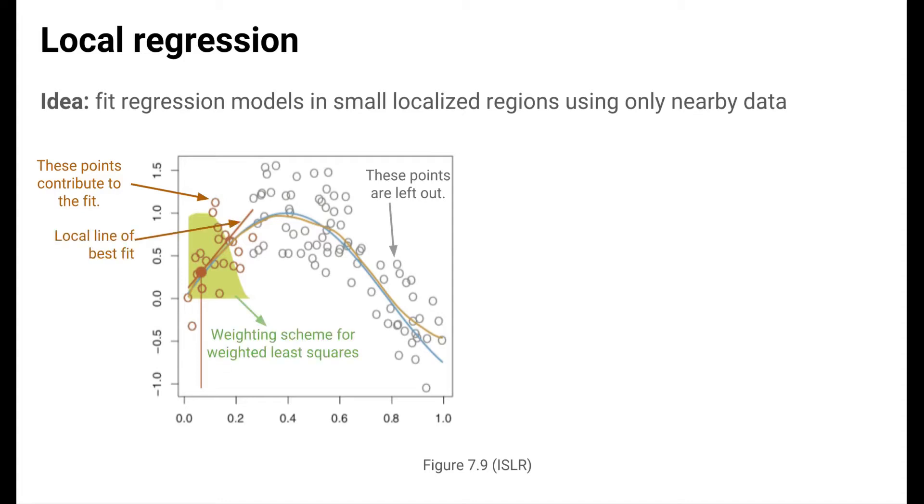The colored points are used to find a line of best fit in this small region. Usually, this best fitting line is found with a weighted least squares approach, rather than the unweighted least squares approach used in ordinary linear regression. In the weighted least squares approach, the idea is that data points closest to the target point of x equals 0.05 should contribute more, should be weighted more, in determining the slope of the line. Points that are further away should be weighted less.